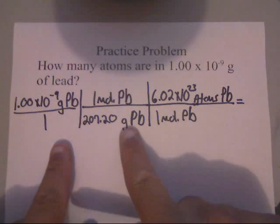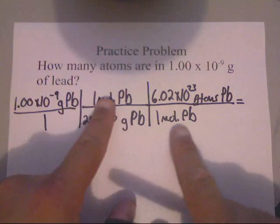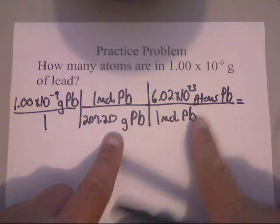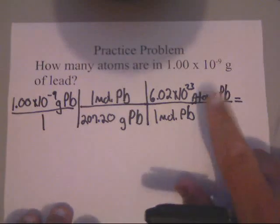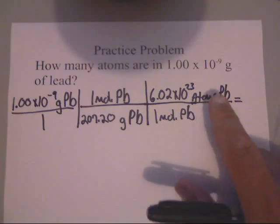So, you notice that grams of Pb cancels with grams of Pb. Mole of Pb cancels with mole of Pb. And, you're just left with atoms of Pb, which is what they wanted. And, remember, whatever you're looking for will always be on top. Now, let me show you how you punch this in on a calculator.